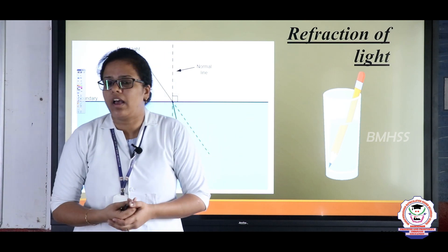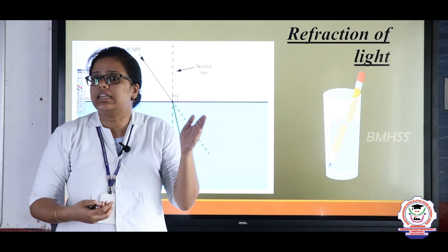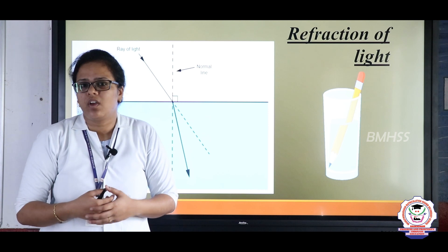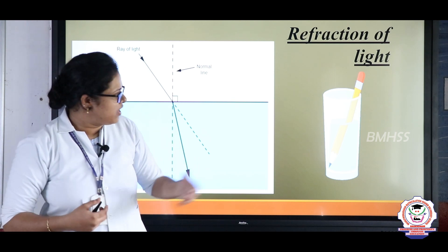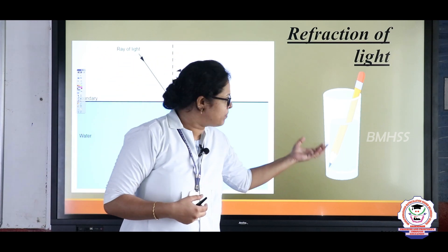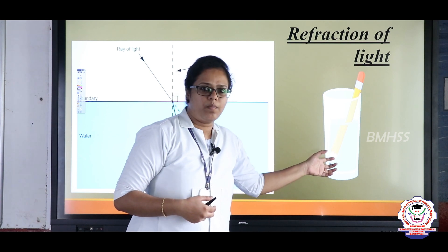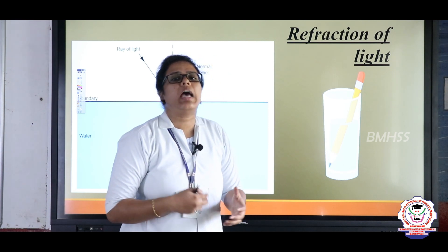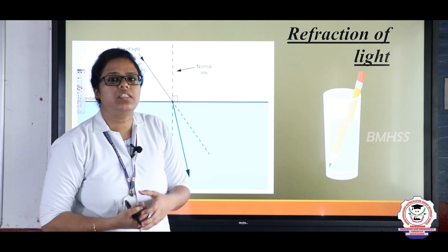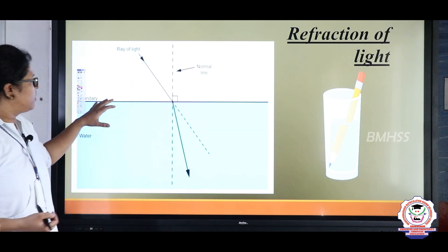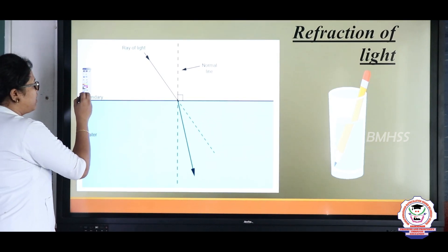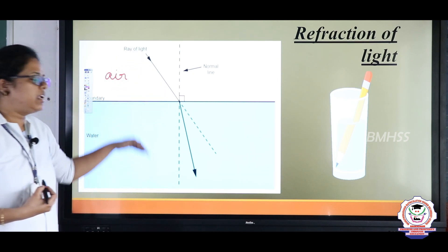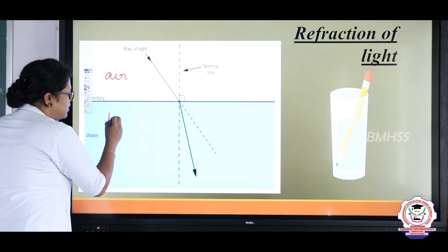When white light strikes a prism it gets refracted. What causes refraction? Here you can see the magic — when the pencil enters from air into water in a glass, you can see a bend in its path. This happens because there is a change in the speed of light. The light is in the air medium, which is a rarer medium. When it enters water, which is a denser medium, the speed of light decreases.